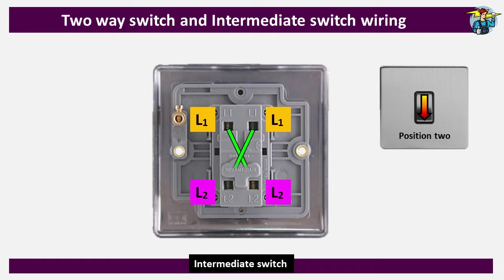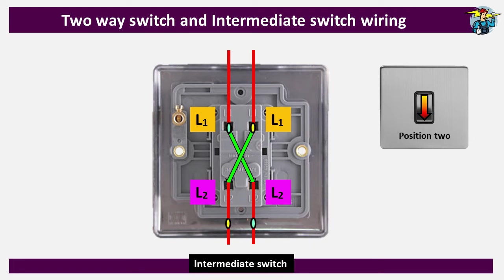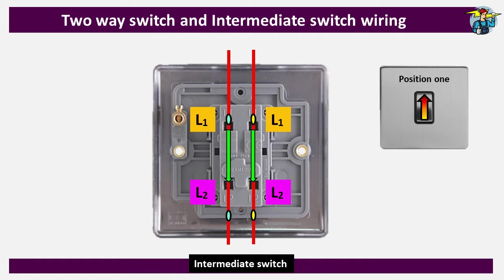When you change the switch to position 2, or downwards, the two L1 terminals break their previous connections with L2 and reconnect to the opposite side L2 terminals. If you connect two power lines to the two L1 terminals, the current flow path will change to the opposite L2 terminals. These are DPDT, or Double Pole Double Throw type switches, where two inlet poles are capable of throwing power to two separate outlet ports.